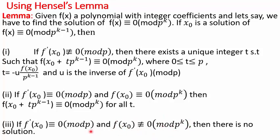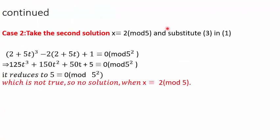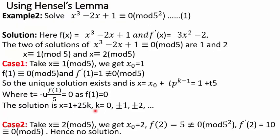Let's come to some examples. Here, we are asked to solve x³ - 2x + 1 ≡ 0 mod 5² — the same example we had solved using the general method. You will see that so much work is reduced when we use Hensel's Lemma. So f(x) = x³ - 2x + 1, and f'(x) = 3x² - 2. When we start with modulus 5, the congruence x³ - 2x + 1 ≡ 0 mod 5 gives us two solutions: x ≡ 1 and x ≡ 2 mod 5.